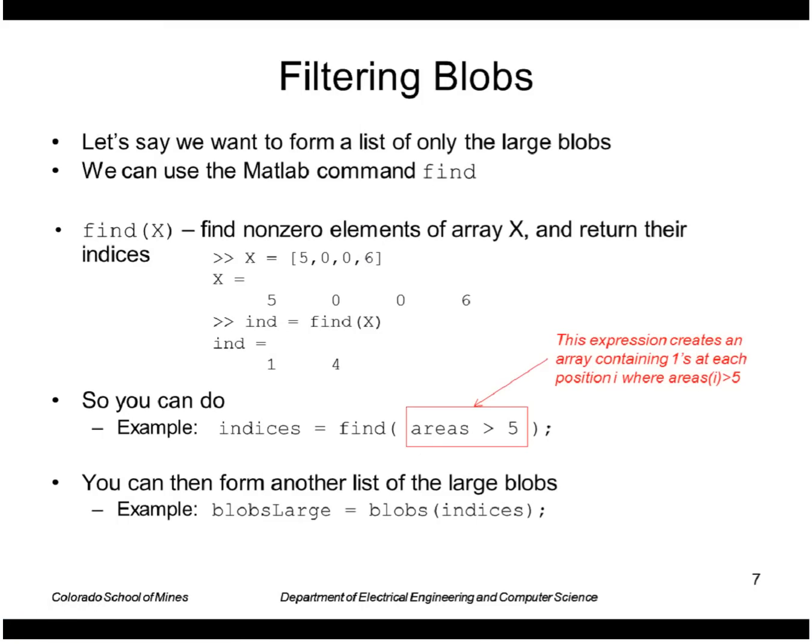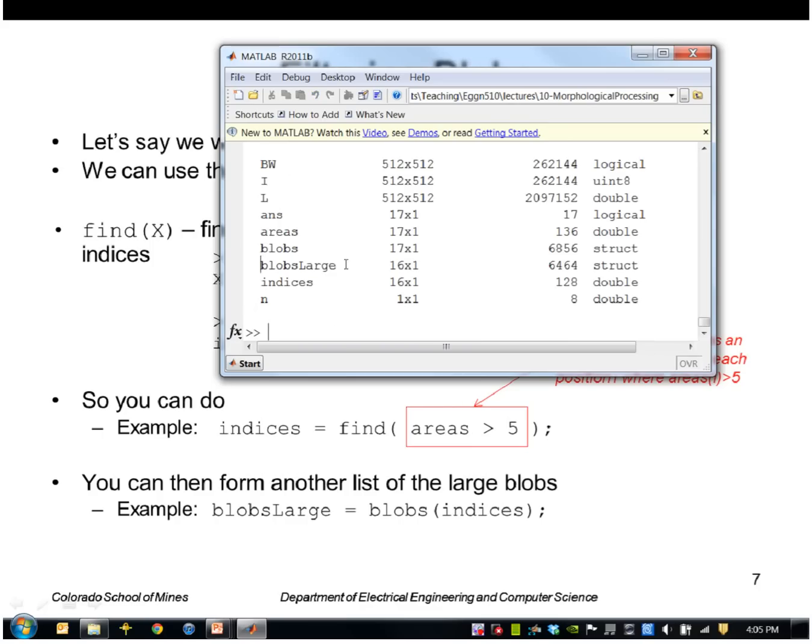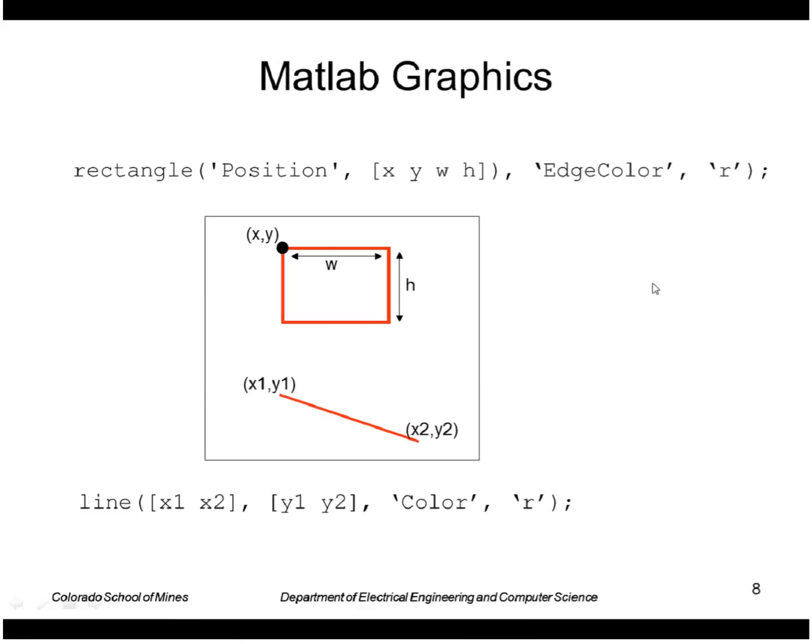And then I can use those indices to just form another list of blobs just getting the large blobs. So I can say blobs and pass in the indices that I just computed. So blobs large now is an array of structures of size 16.